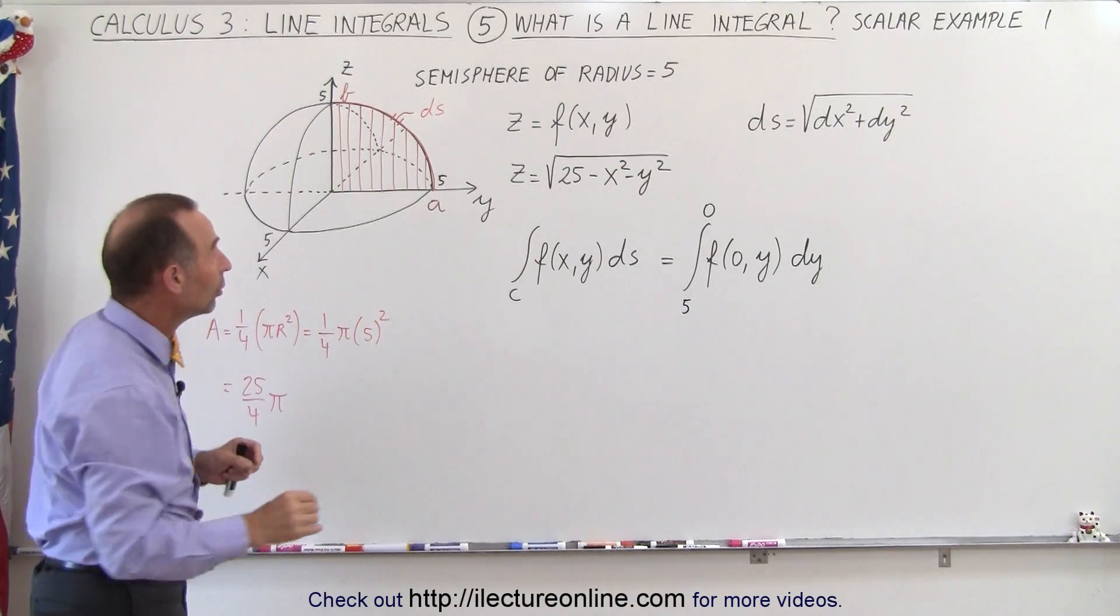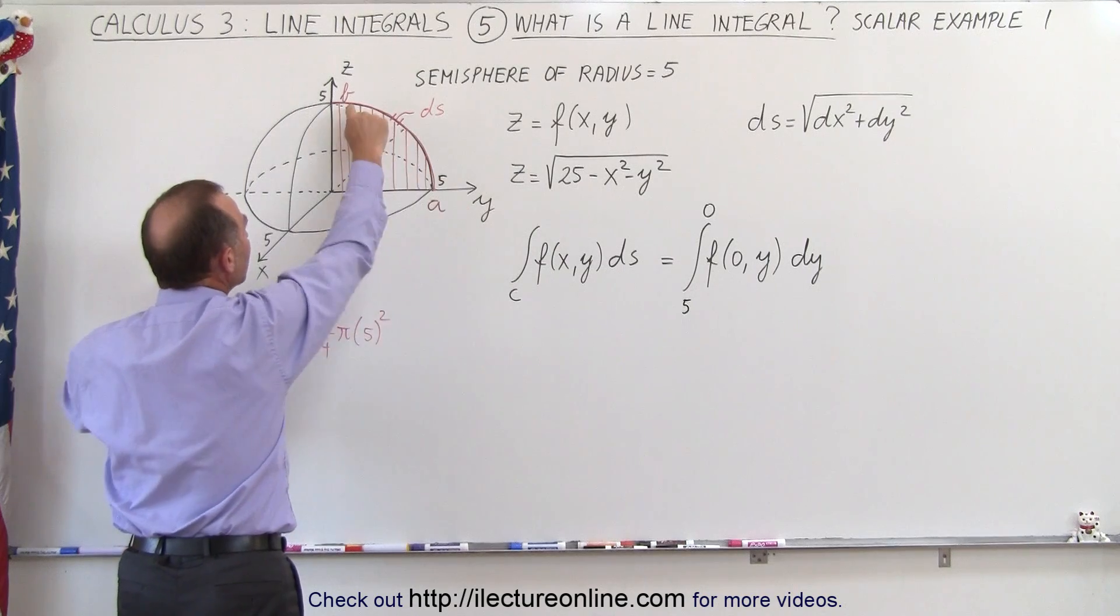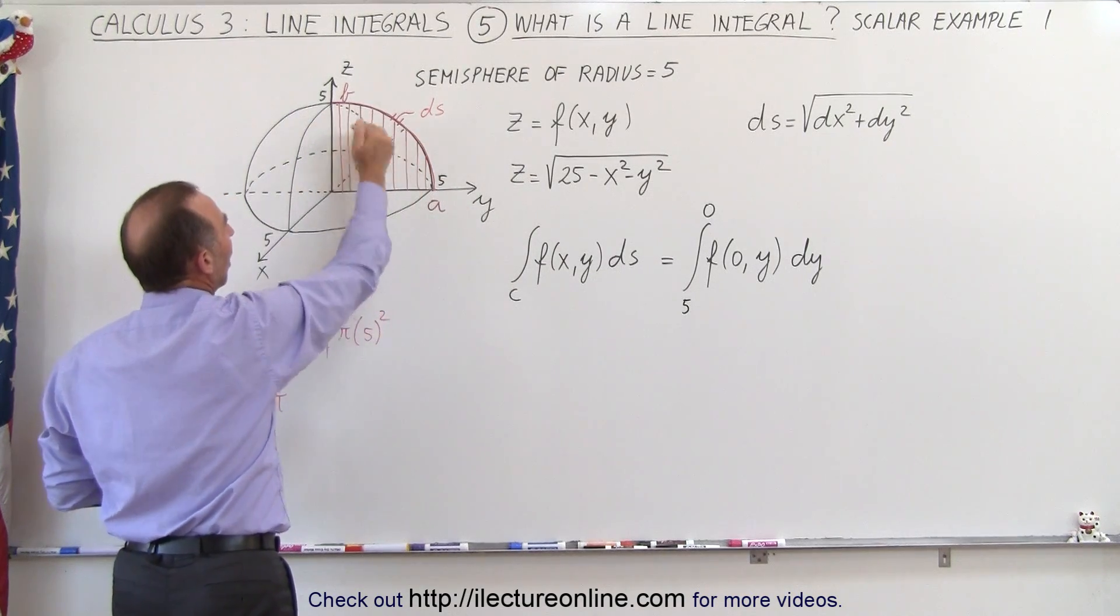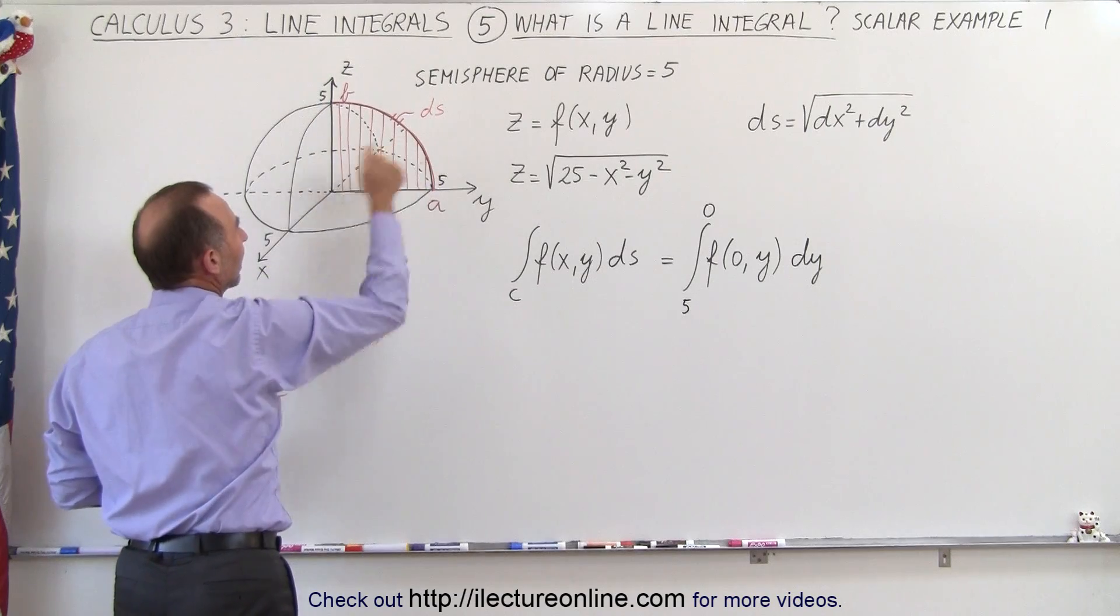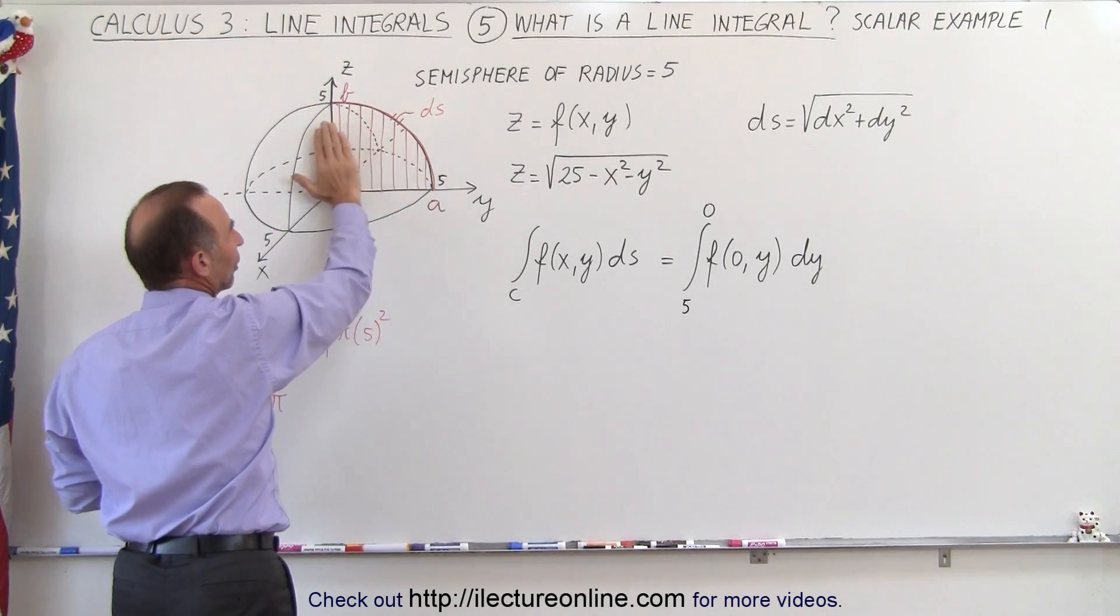The line integral along the surface of that semi-sphere from a to b is going to be equal to the area underneath that curve, underneath that line. And so think of it as a curtain hanging down. We're trying to find the area of that.